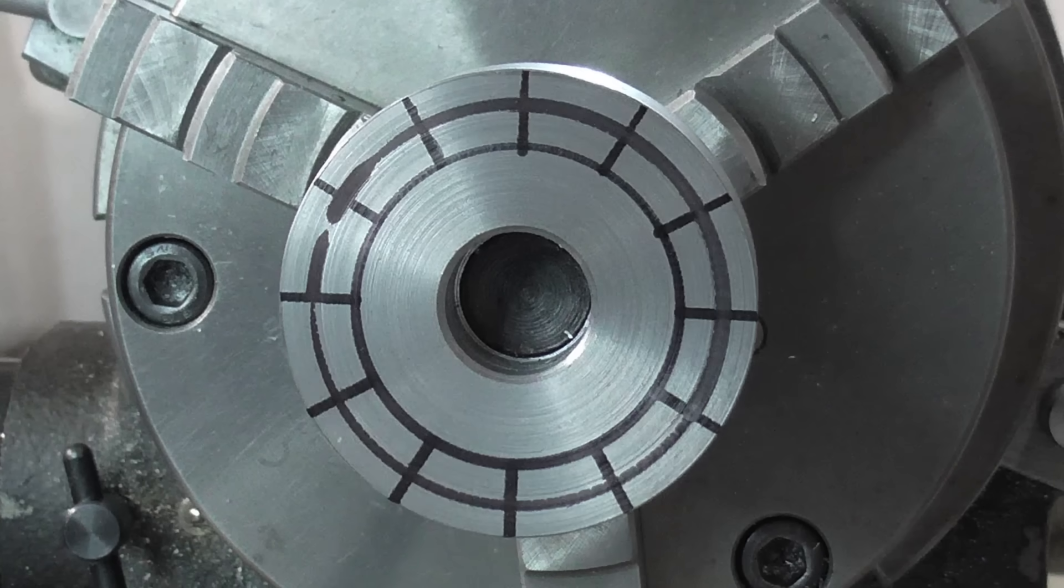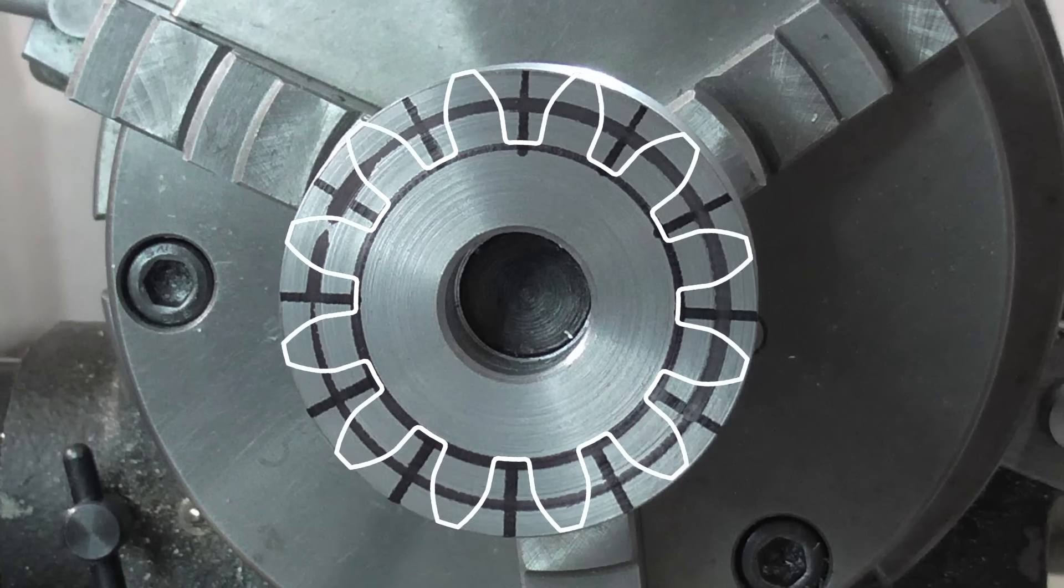I've also drawn on here the root circle and the pitch circle. The calculations for cutting the teeth will be based on the pitch circle. For this gear, it's 24mm radius.